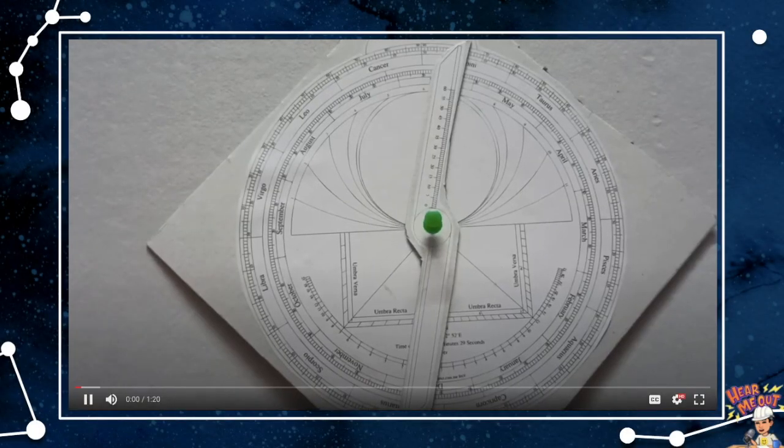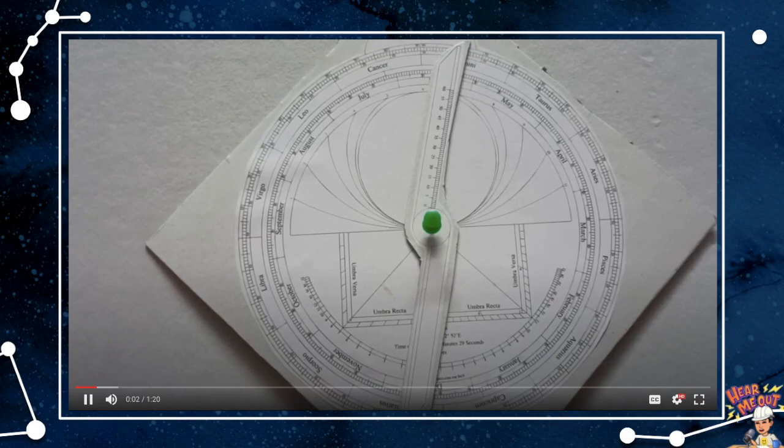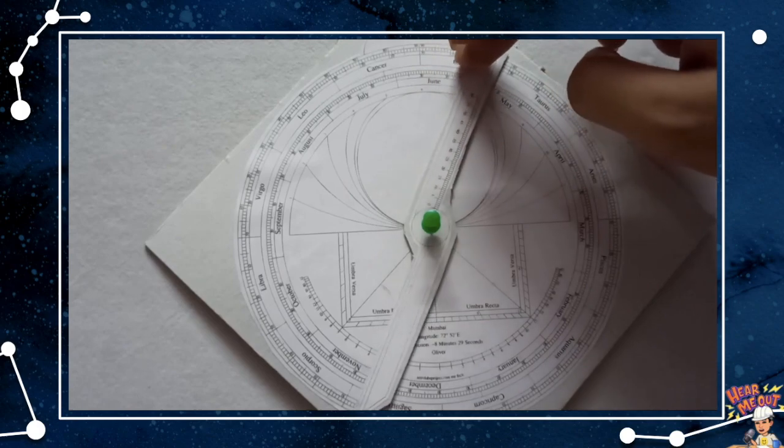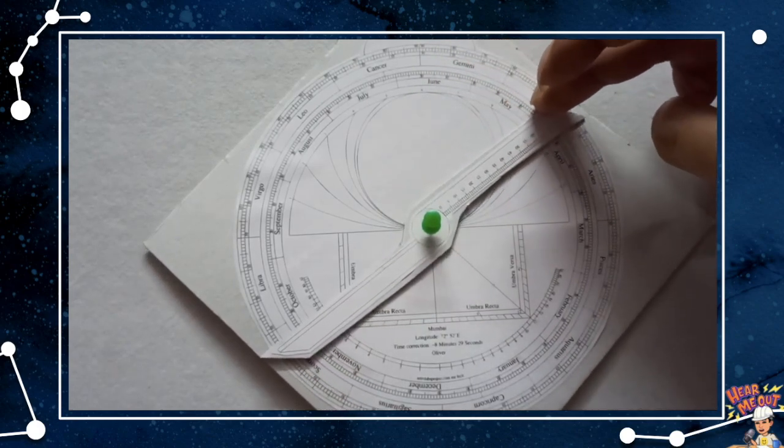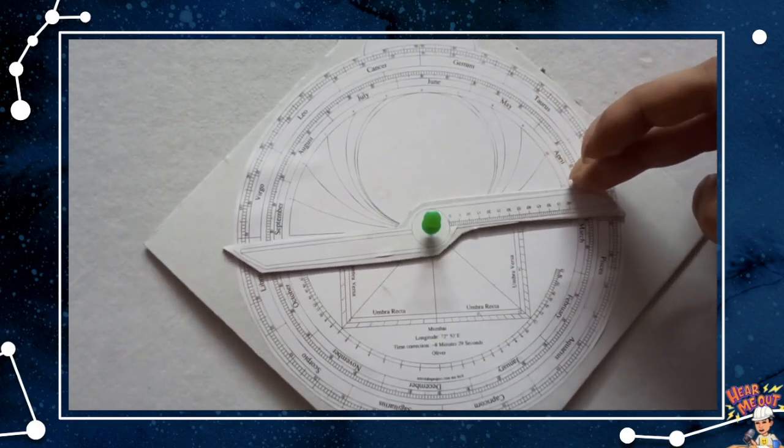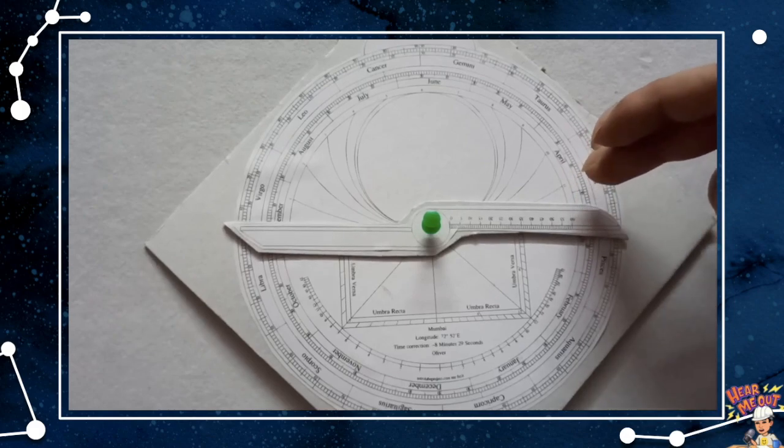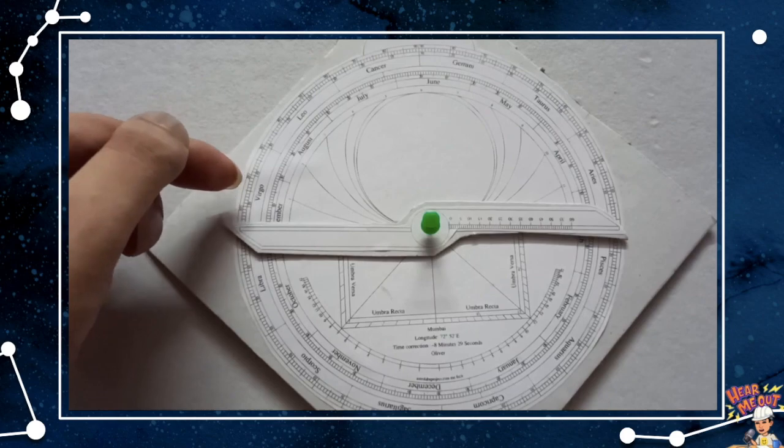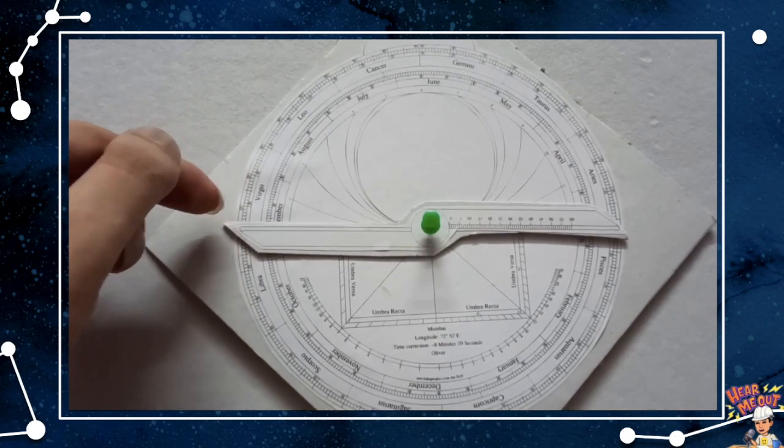We look at the back of the astrolabe. Today is September the 16th and we can use the alidade to find the position of the sun in the ecliptic. So September 16th is somewhere over here. And that gives us the sun's position in the ecliptic in the constellation Virgo. Specifically at Virgo 25.